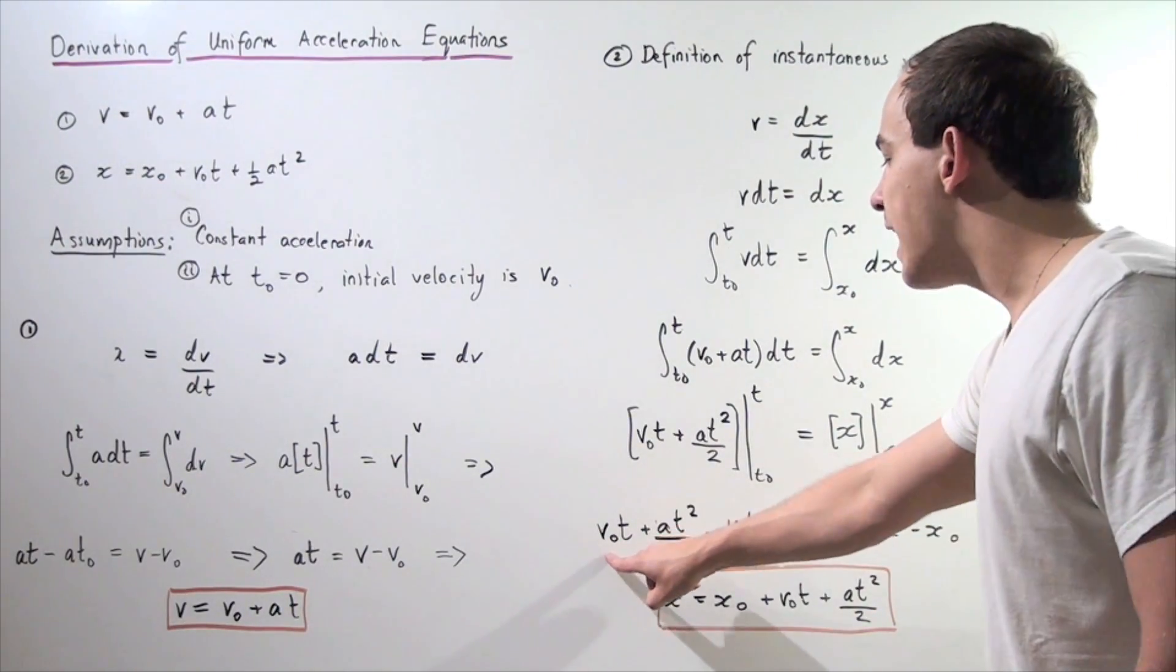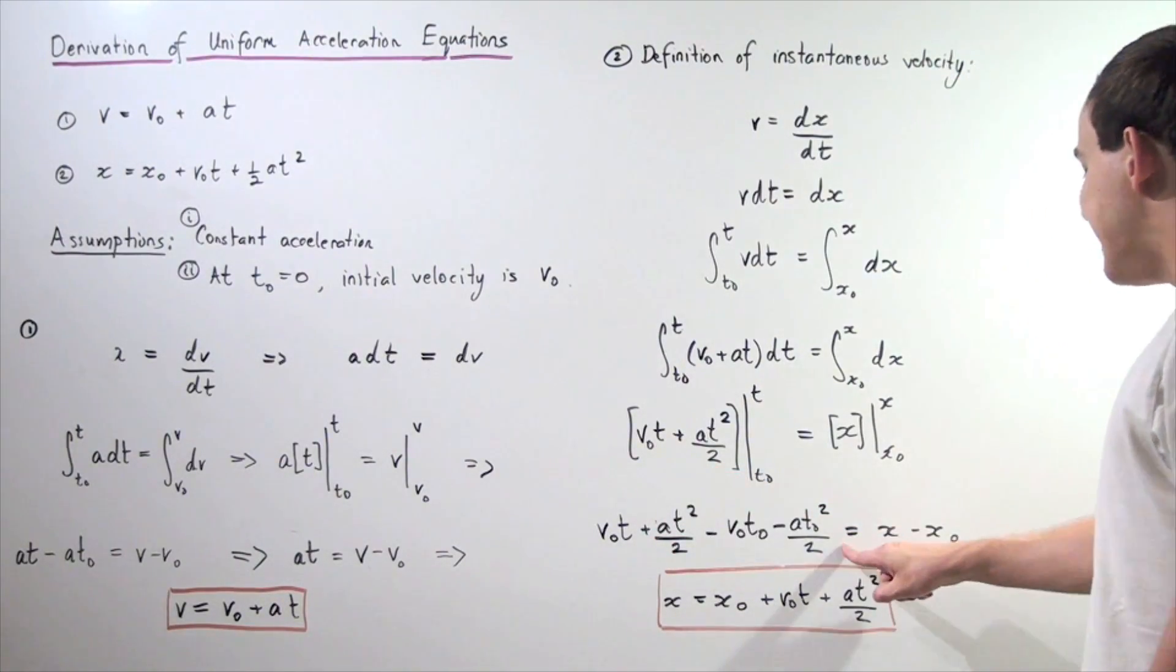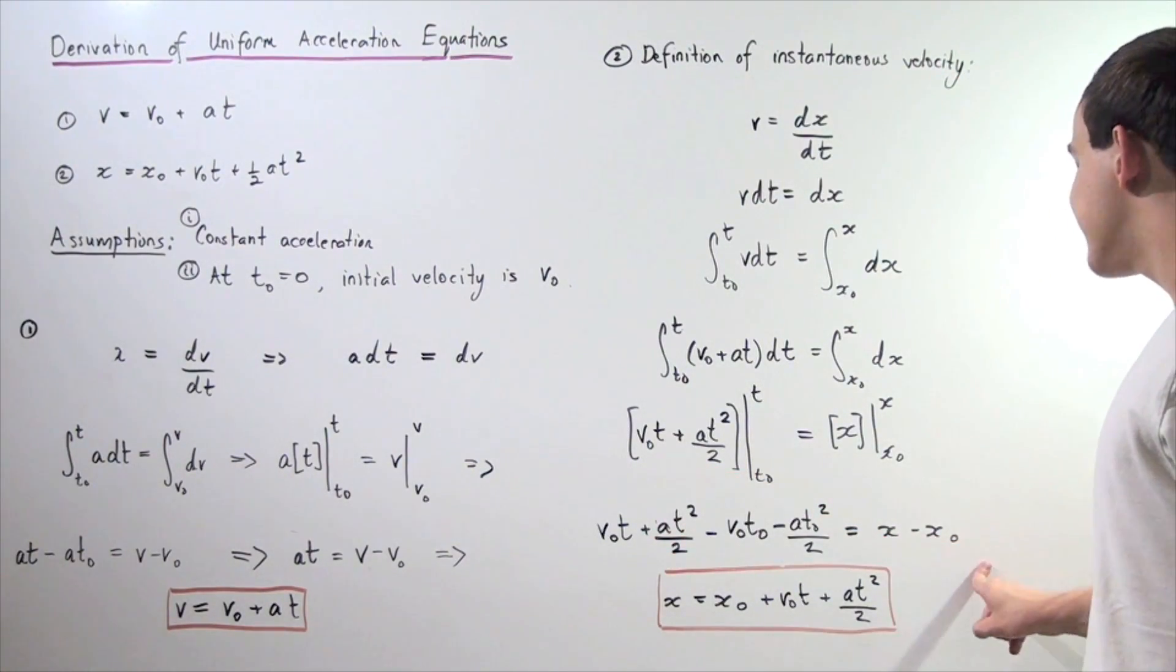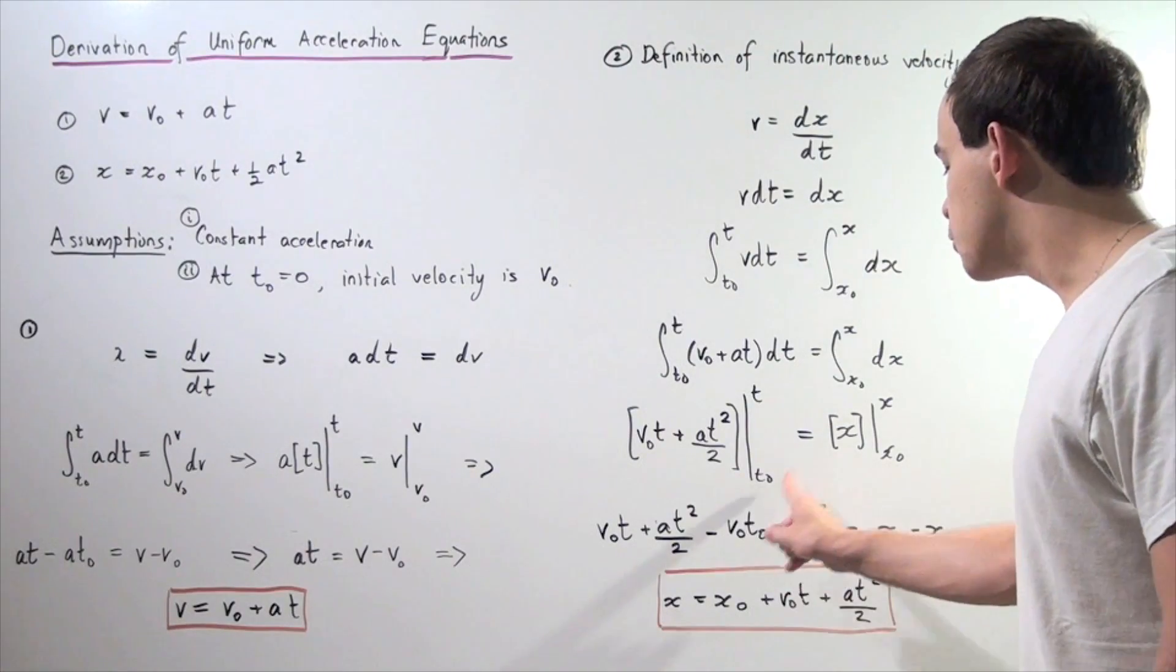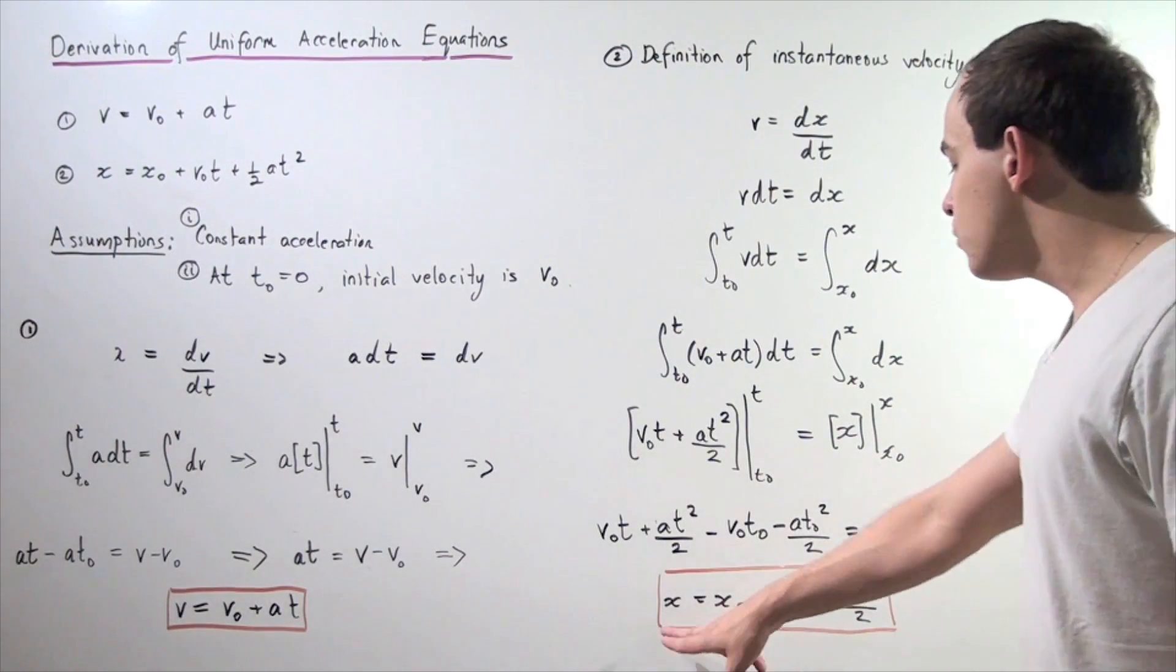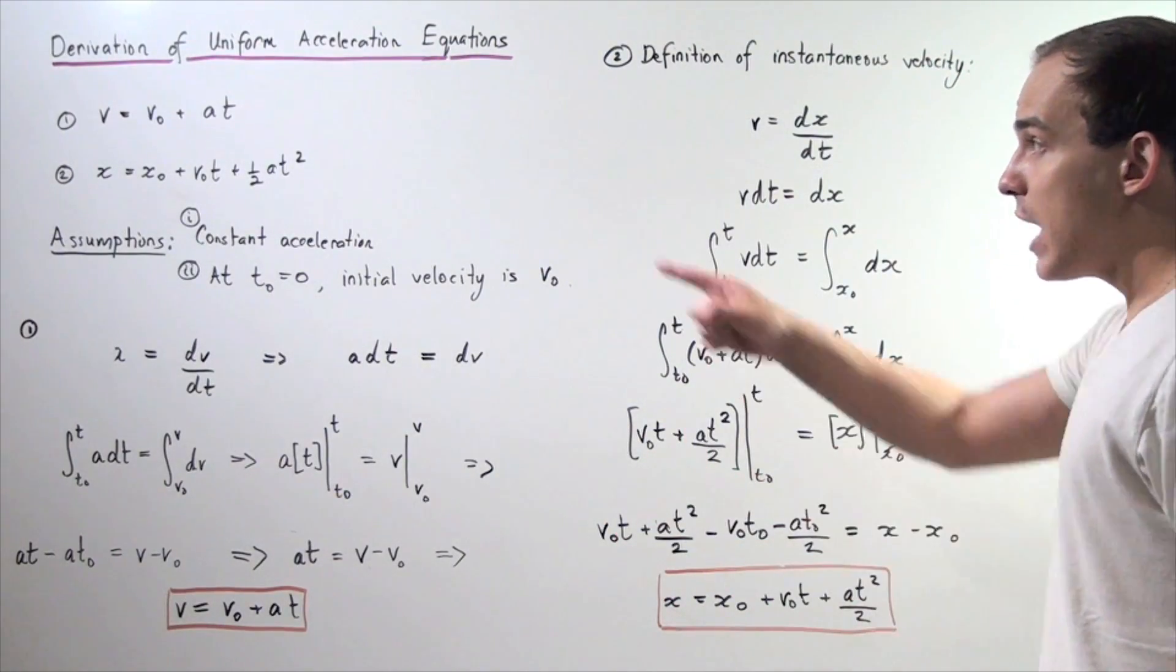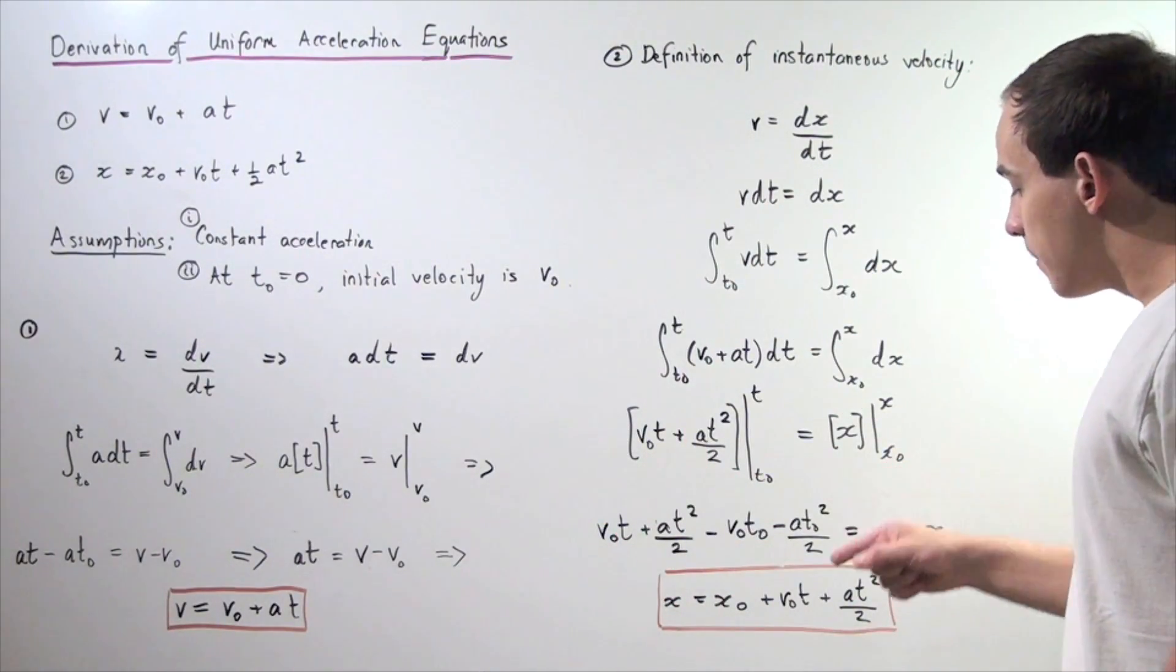We are left with v-naught times t plus a times t squared divided by 2 equals x final minus x initial. These two terms get cancelled out, we rearrange our equation and we get our final position x is equal to our initial position x plus v